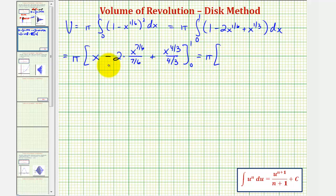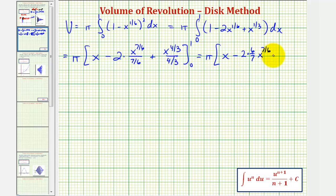Let's simplify. We have pi times x minus — dividing by seven-sixths is the same as multiplying by six-sevenths, so we have two times six-sevenths x to the seven-sixths — plus, dividing by four-thirds is the same as multiplying by three-fourths, so we have three-fourths x to the four-thirds. Simplifying further, the coefficient becomes twelve-sevenths.